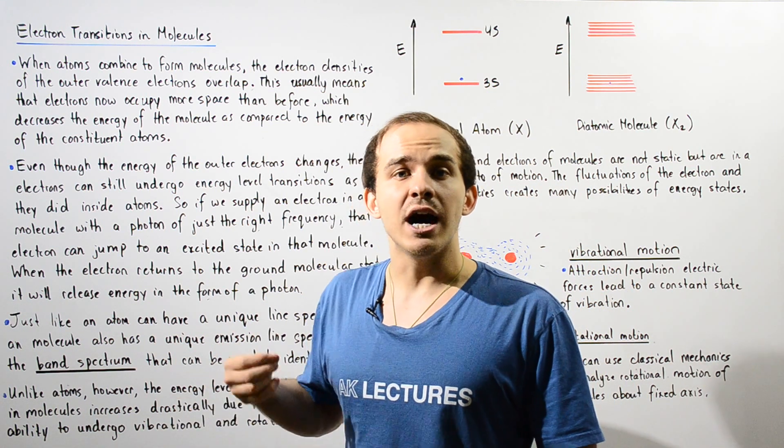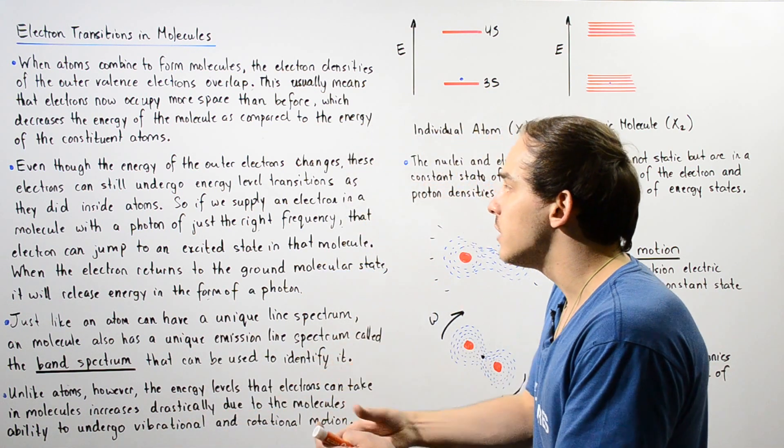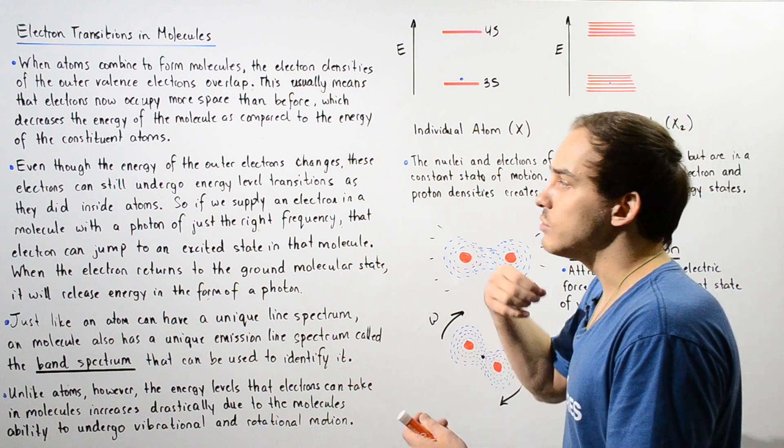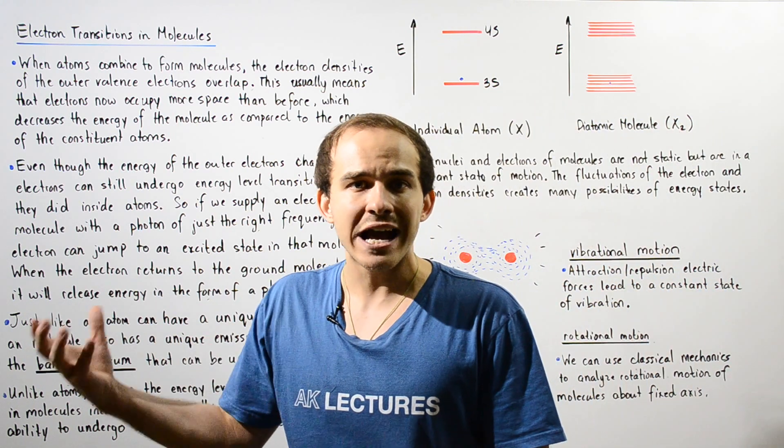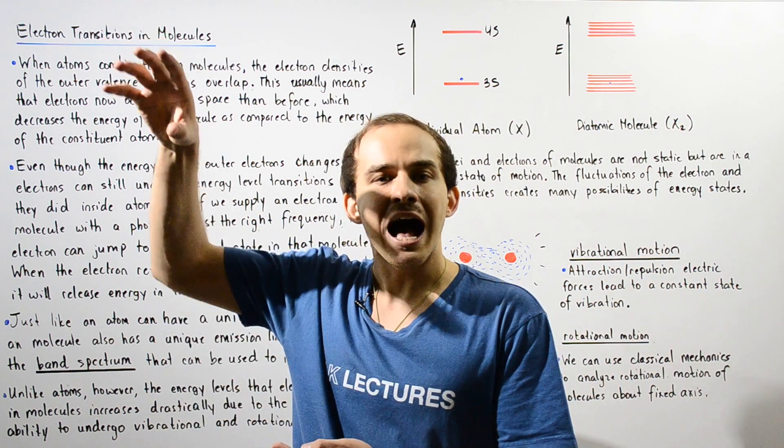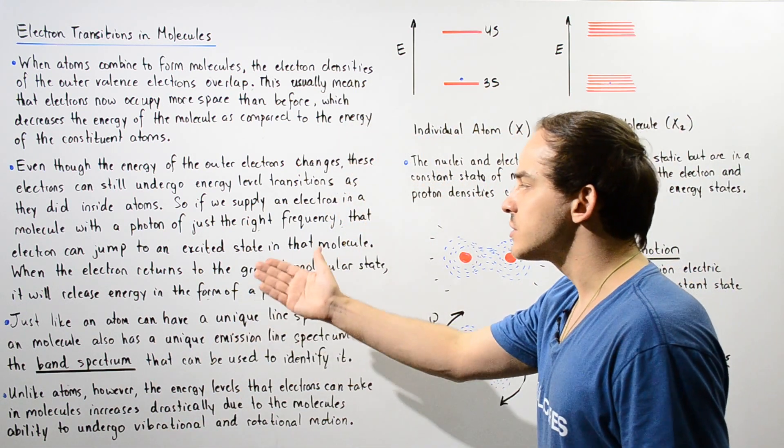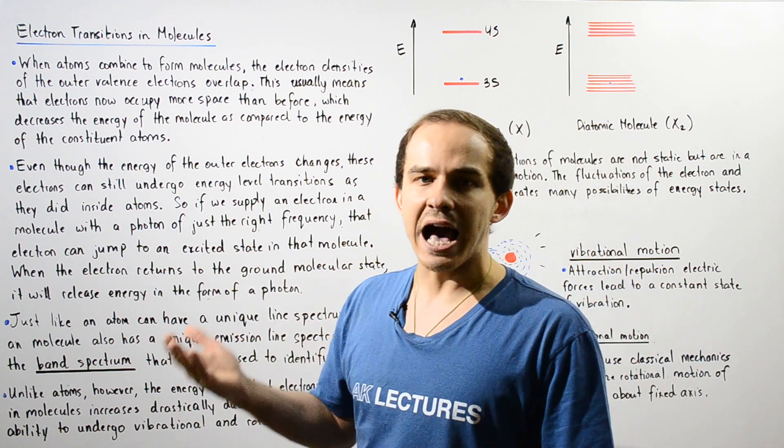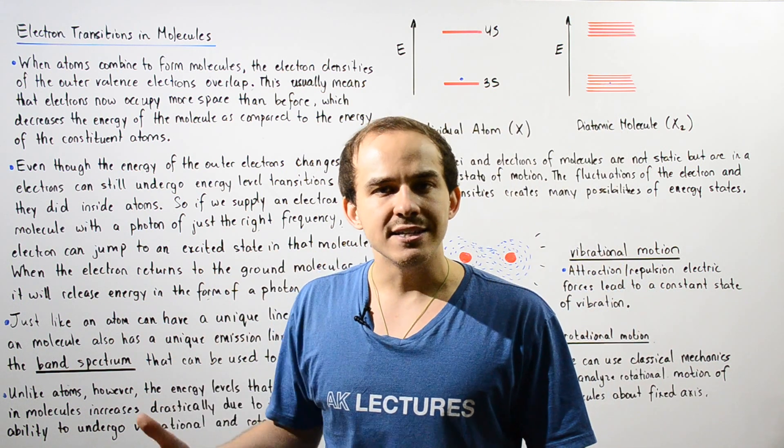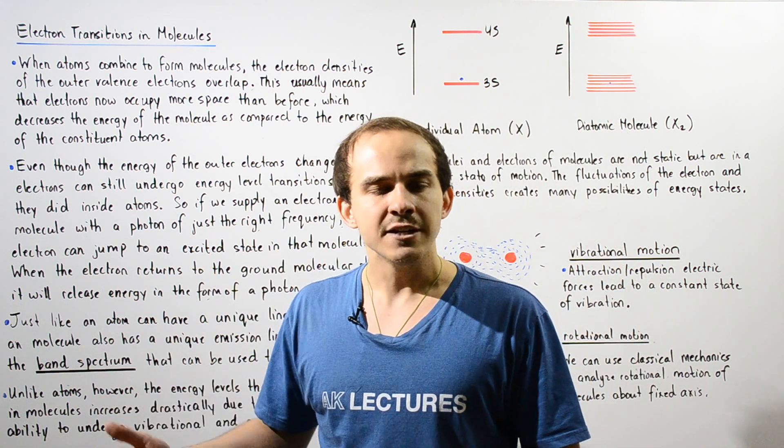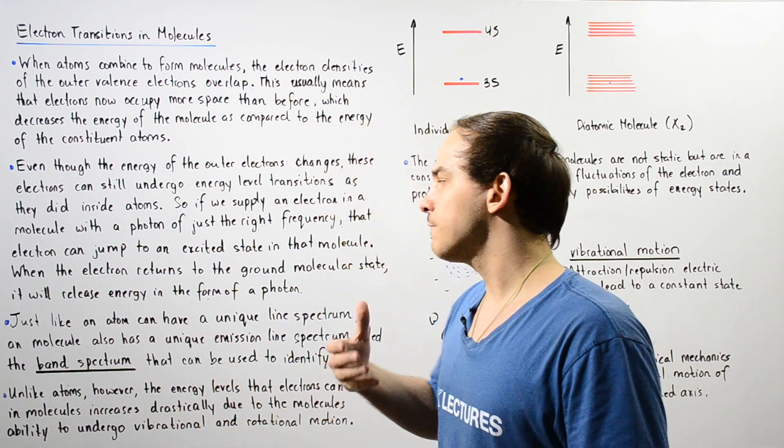So basically, if we allow a photon of light to hit that electron with just the right frequency, that electron can jump to a higher or excited energy state. And when the electron returns to the ground state from the excited state, it will release a certain photon of light that carries a certain frequency.